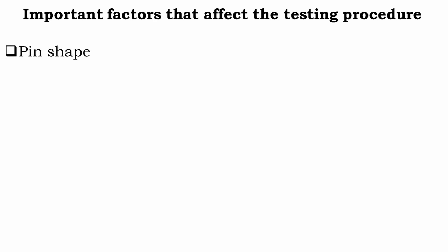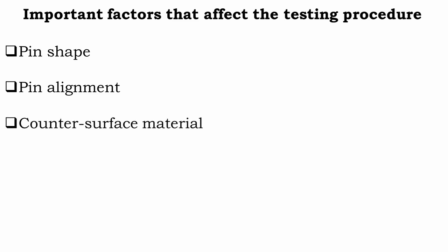Now, important factors that affect the testing procedure. First is pin shape — typically the pin can be of any shape; however, mostly spherical and cylindrical shapes are used. The next is pin alignment. If the pin is flat ended, the alignment should be ensured, since otherwise non-uniform loadings can occur, resulting in non-uniform wear and possibly overloaded conditions and wrong frictional data. The edges of the flat specimens should not be sharp; otherwise, chipping may occur at the interface.